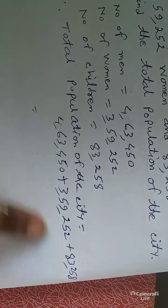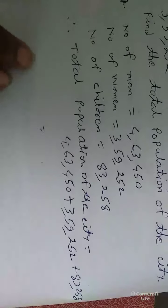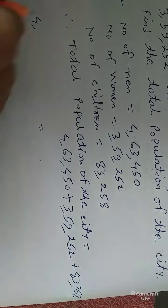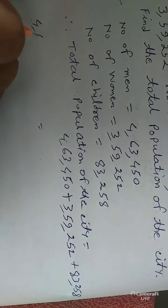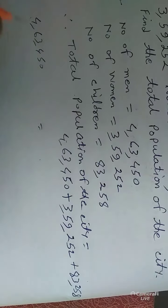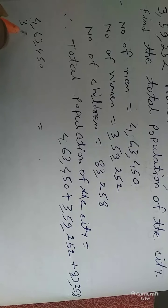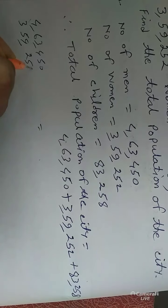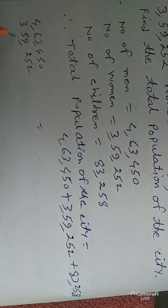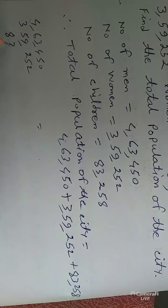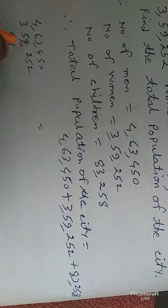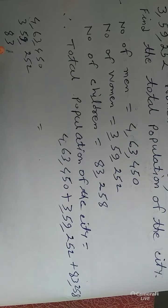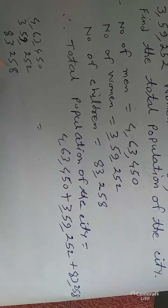We need to add three numbers. First add: 4,63,450 plus 3,59,252 plus 83,258.